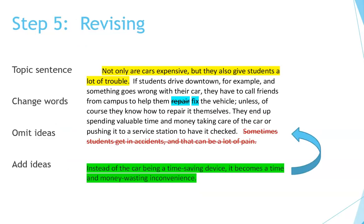Step five is revising. Let's take a look at a single paragraph from the body of the essay to see what this student needs to do to revise. We start with the topic sentence — notice that the paragraph is indented at the top with five spaces, which is a typical way of opening a paragraph. The student starts with the topic sentence, then has several supporting details below that.